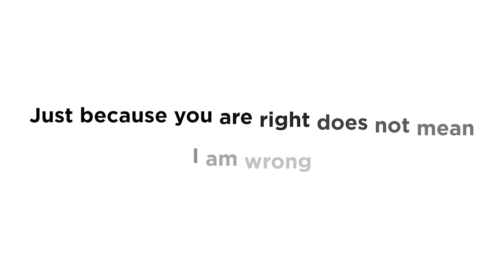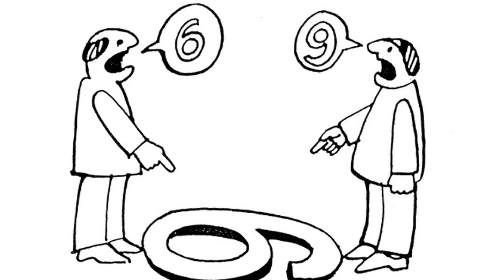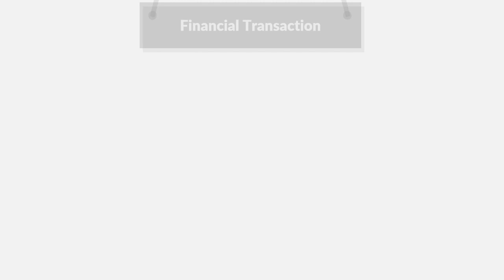Just because you're right doesn't mean I'm wrong. You just haven't seen life from my side. Personally, this picture is a perfect analogy of what exactly debit and credit is. Debit and credit are the reflections of the double-sided nature of all financial transactions, and every financial transaction involves a flow of economic benefit from a source to a destination. Credit is the source that those economic benefits can flow from, whereas debit is going to be the destination that those economic benefits can flow to.